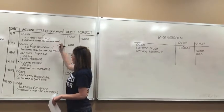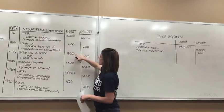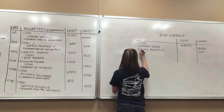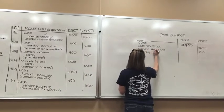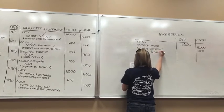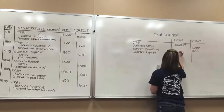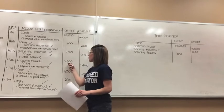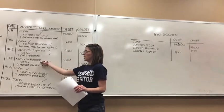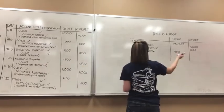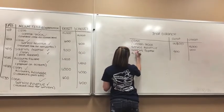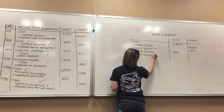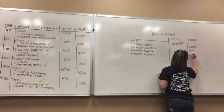Now we've done service revenue, so we're at salaries expense. Salaries expense was debited for $900 and wasn't used anywhere else, so we can just transfer that over — salaries expense, debit for $900. Now we're on to accounts payable. It was debited for $1,500, but accounts payable is a liability, so it transfers over with a credit normal balance. We write accounts payable and it goes in the credit column for $1,500.